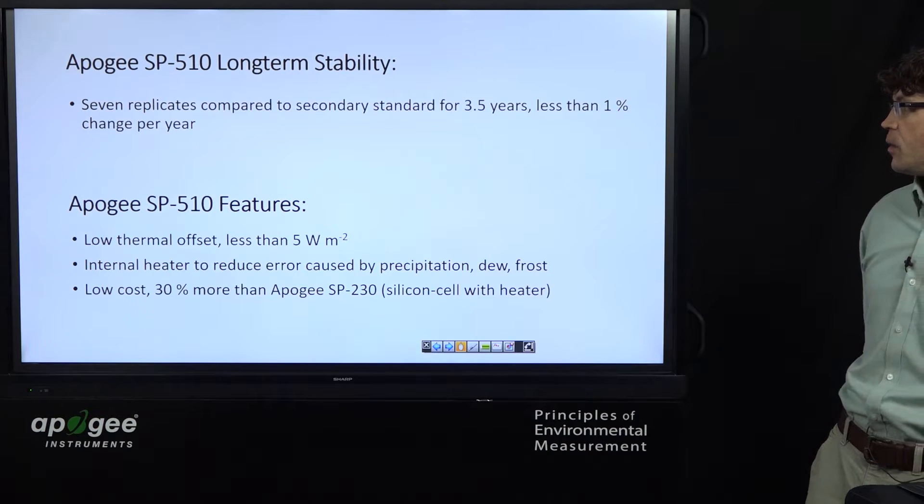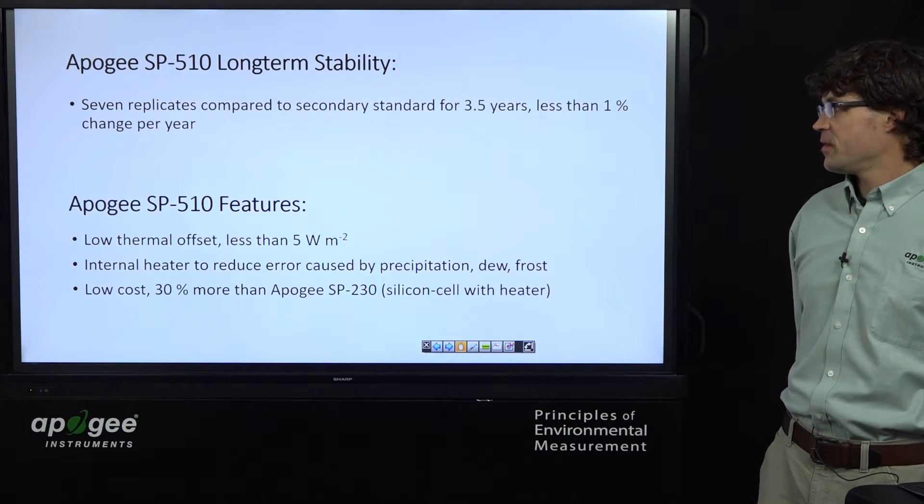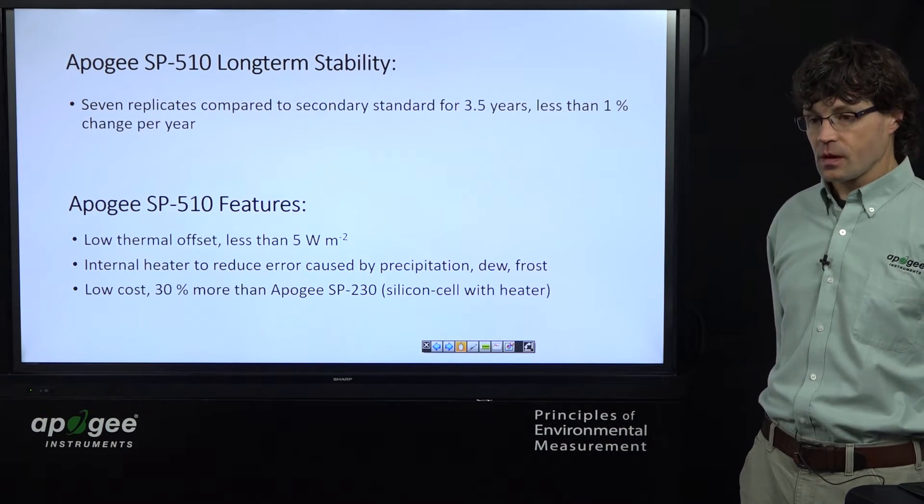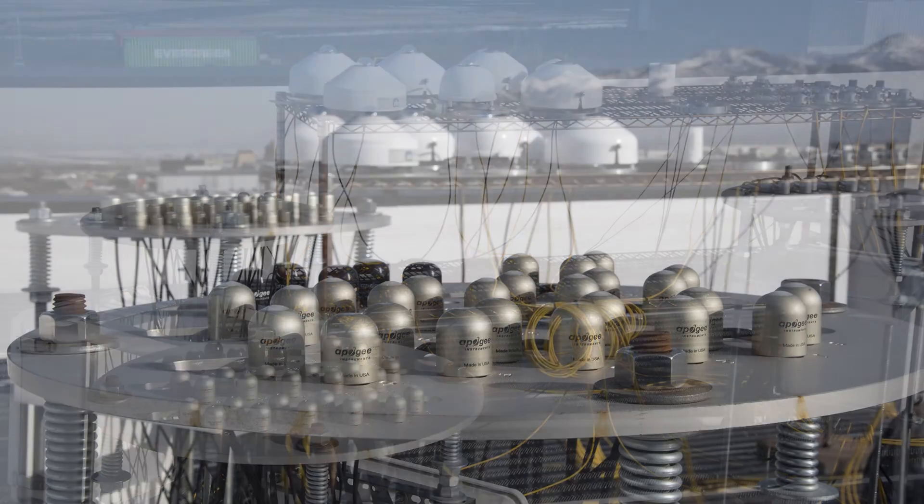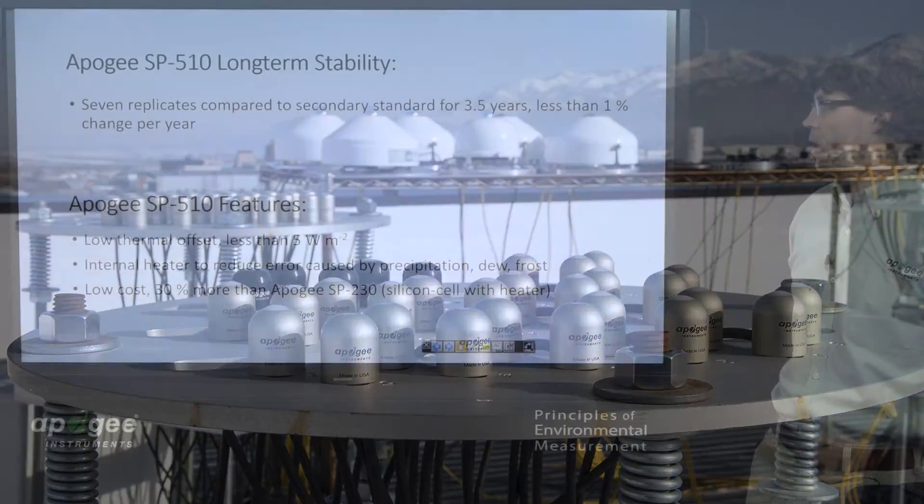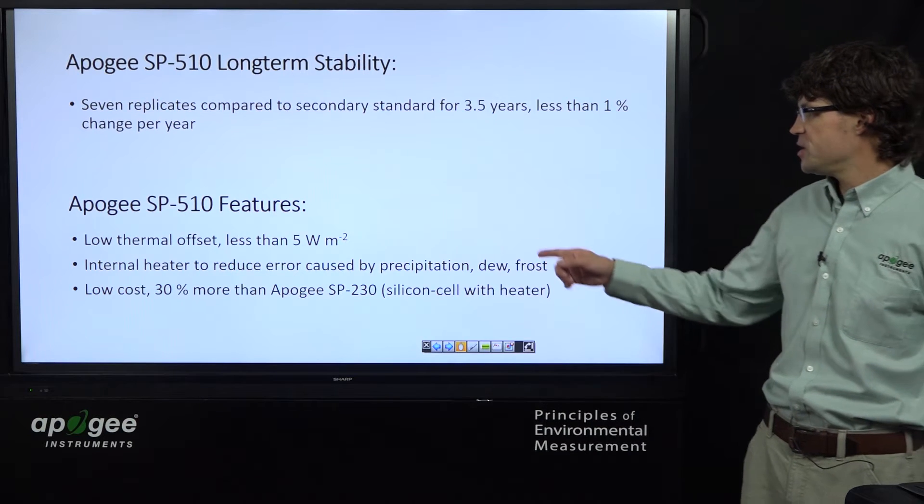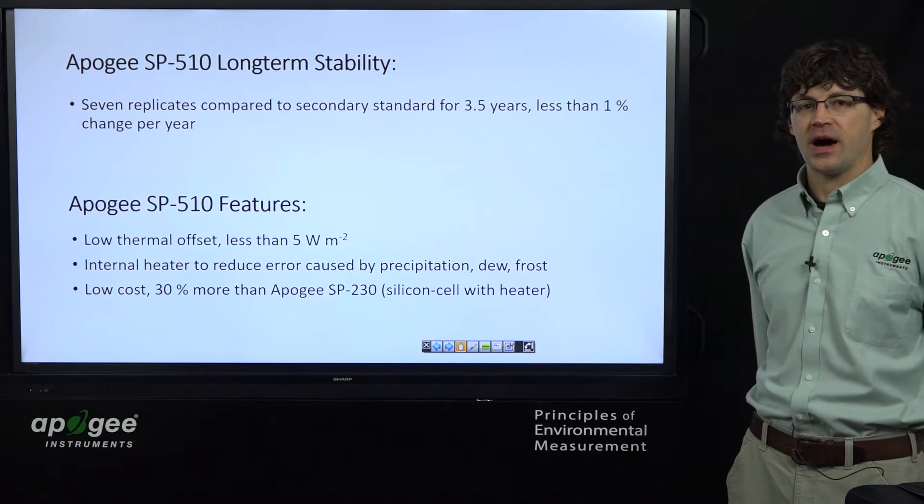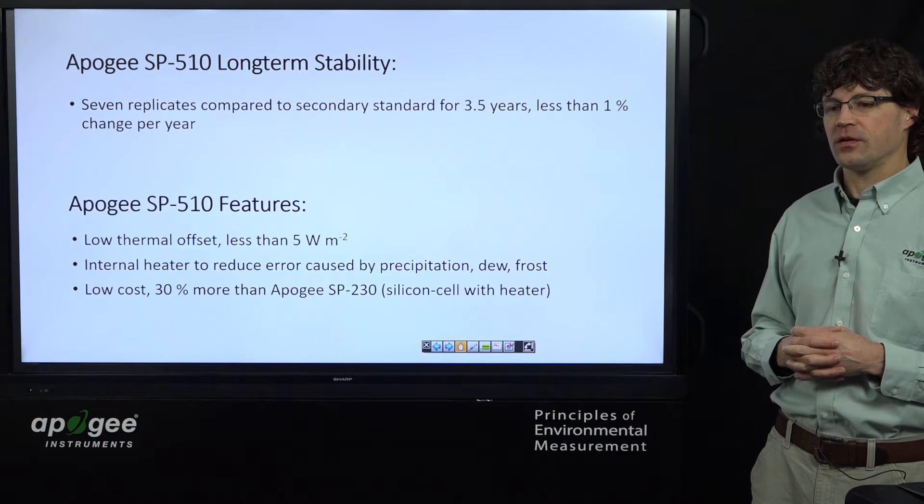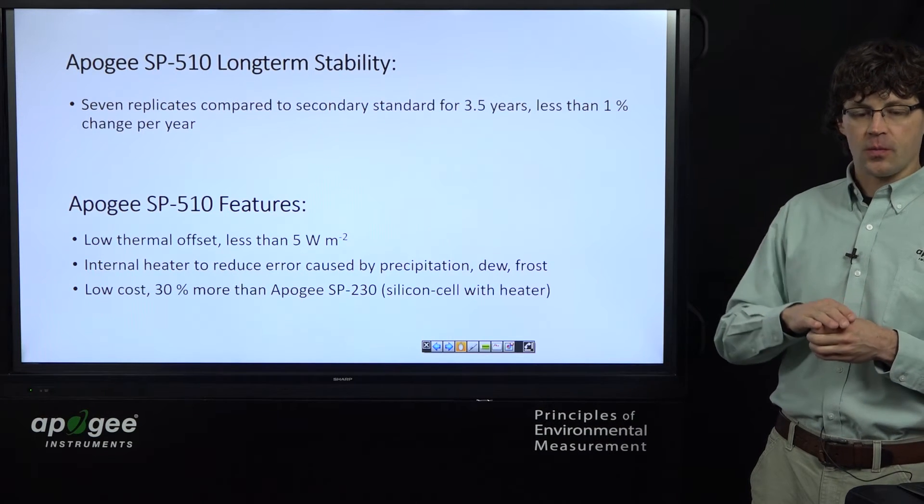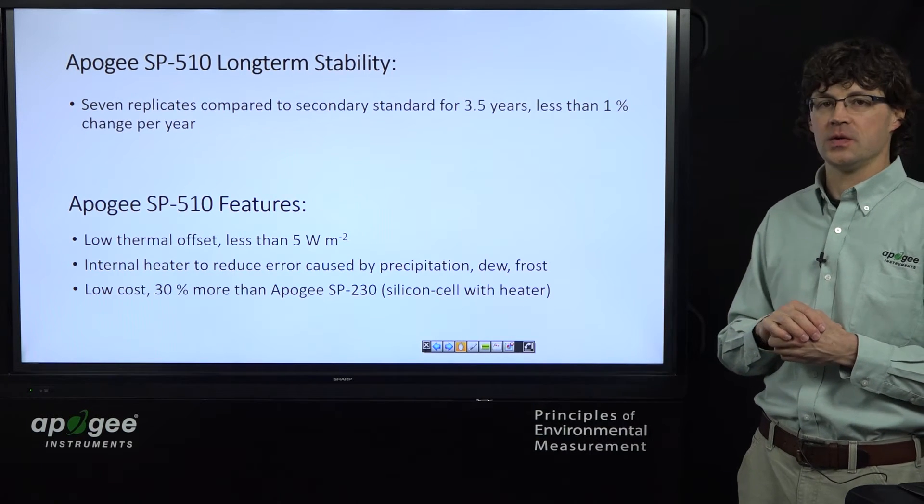Just to give you an idea of some more of the features and performance of this particular model, we've had seven replicates of the SP510, some prototype sensors that have been deployed continuously on our rooftop for three and a half years. We've been comparing them to secondary standard pyranometer. All of the seven replicates have been stable. None of them have changed by more than 1% per year. Some of the features, it has a low thermal offset, less than 5 watts per meter squared. Because it doesn't have the traditional glass dome of a standard thermopile sensor, it has a diffuser more like a silicon cell, and we can better thermally bond that to the thermopile detector itself, and it reduces the thermal offset.